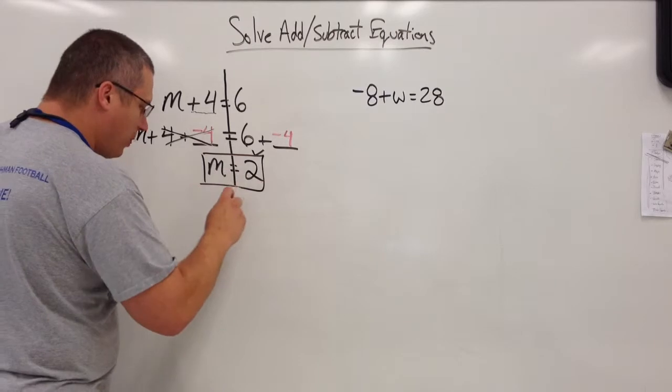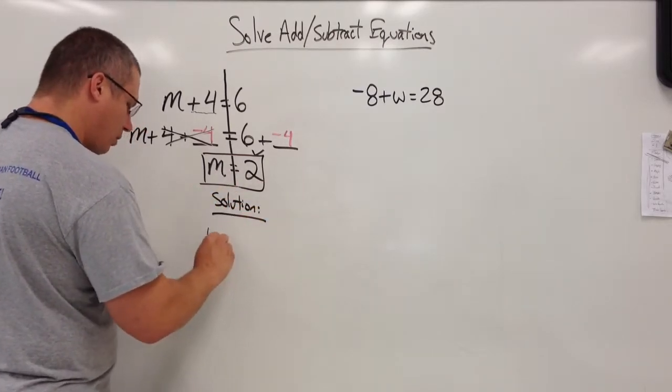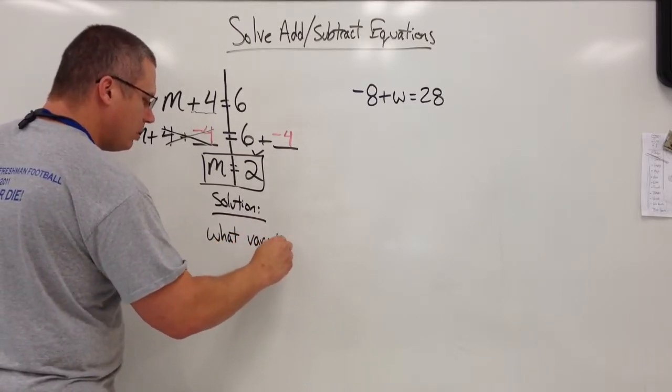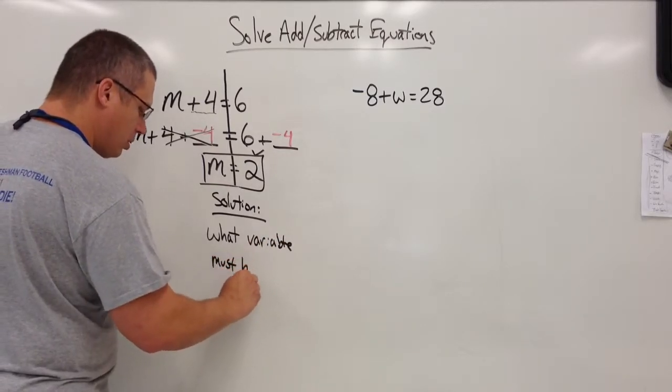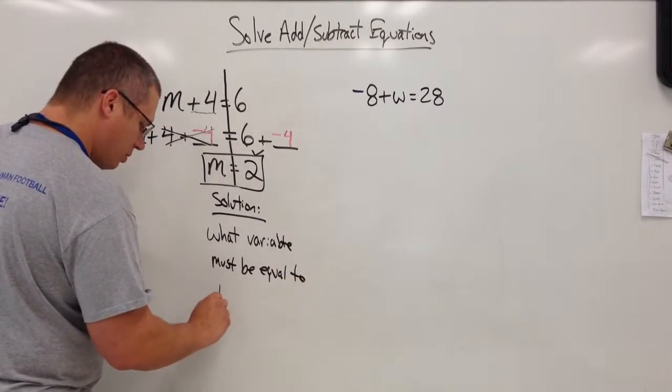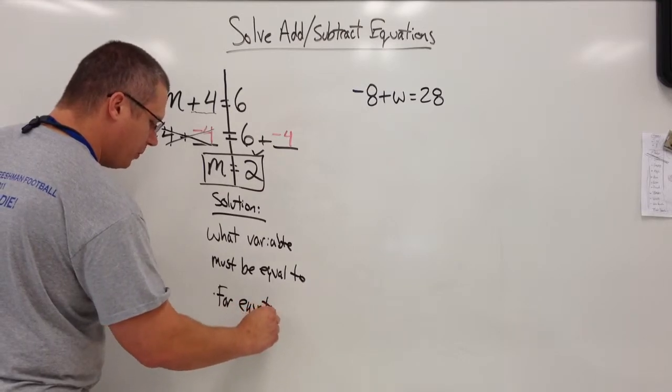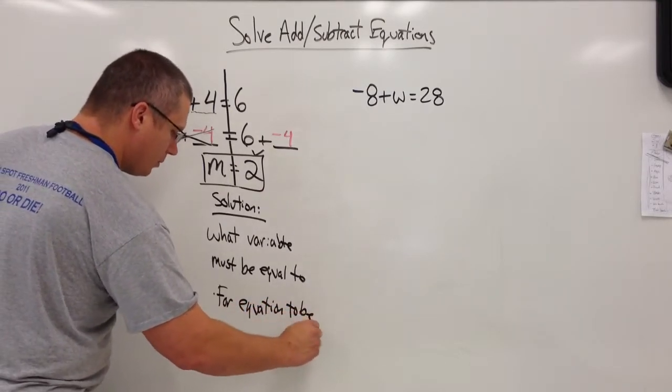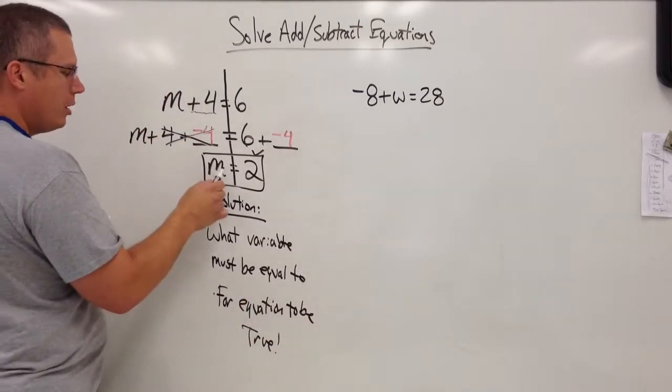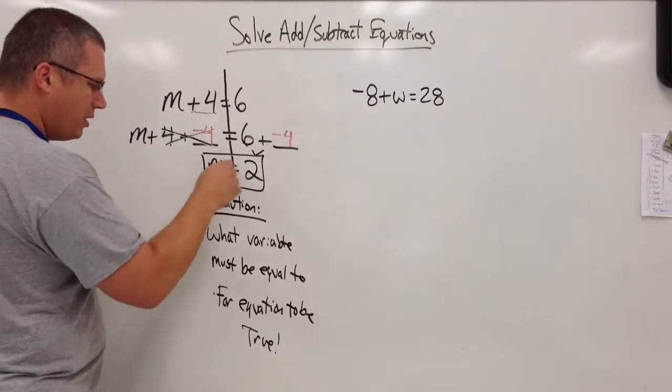So note, this thing we found is my solution, by the way. A solution is what the variable must be equal to for my equation to be true. In other words, does 2 plus 4 equal 6? Yeah, it's true. So this is my solution. So what we're going to do is we're going to add opposites.